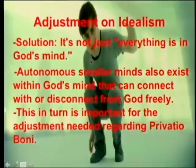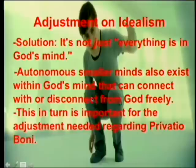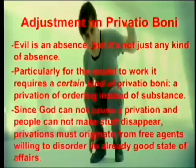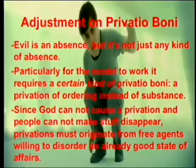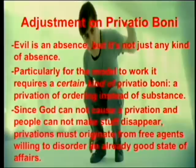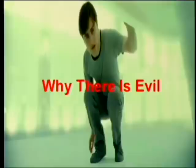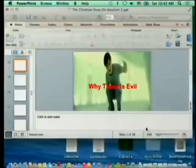This leads to the first adjustment. The solution is: everything is in God's mind, but it's autonomous. Smaller minds can exist within God's mind that can also connect or disconnect from God freely — they can choose to align or misalign their wills with God. This is also important for the adjustment needed regarding privatio boni. Evil is an absence, but not just any kind of absence — it's a privation of ordering instead of substance. Privations have to originate from free agents willing to disorder an already good state of affairs, like a glass that falls and shatters.